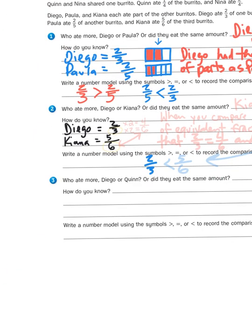So go ahead and try problem three on your own, comparing Diego to Quinn, and try to figure out which kid ate more burrito. If you have questions, feel free to reach out to your math teacher. Otherwise, we will talk again soon, friends. Thanks.